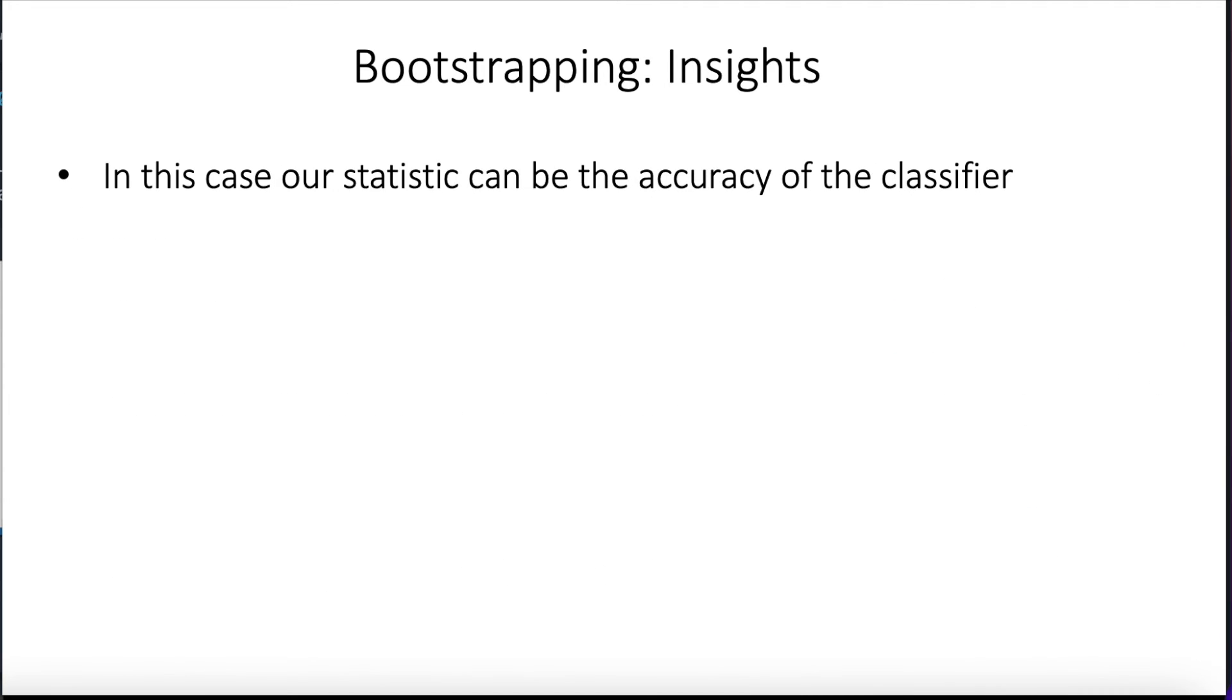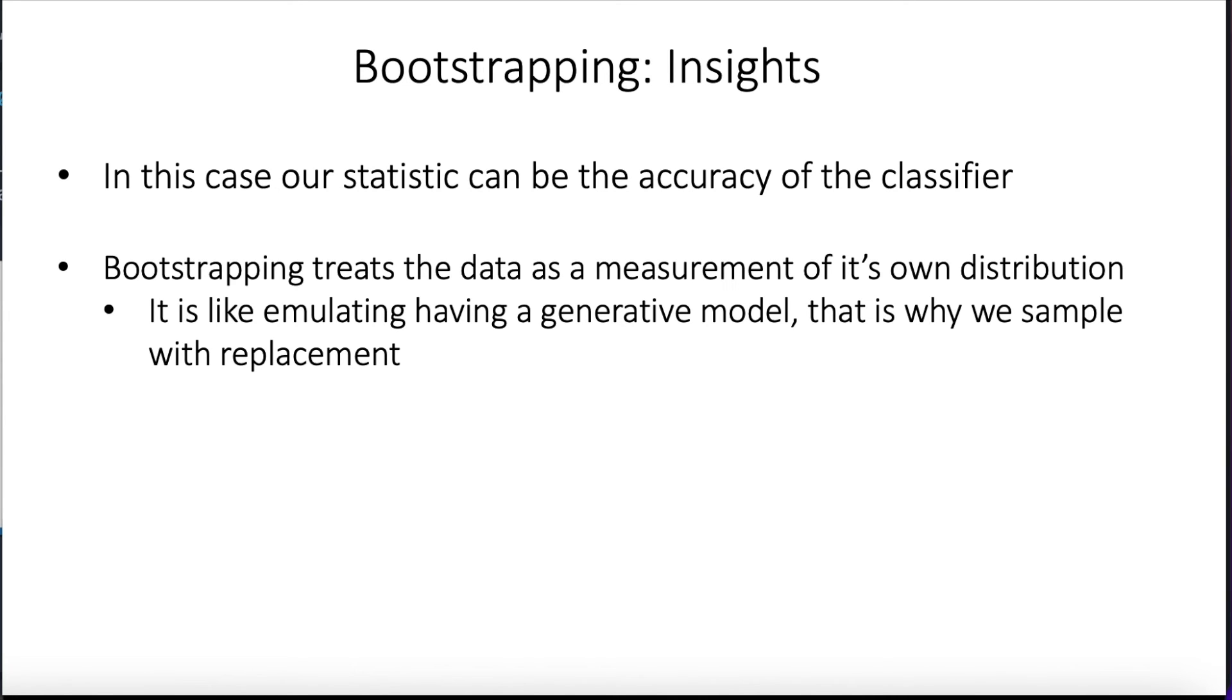So in our case, the statistic we are using here is the accuracy of the classifier. As I mentioned before, it's interesting to see that bootstrapping treats the data as a measurement of its own distribution. So this is why the bootstrapping emulates having a generative model, and that's why we sample with replacement, because we use the same database as a mechanism to generate our own samples.